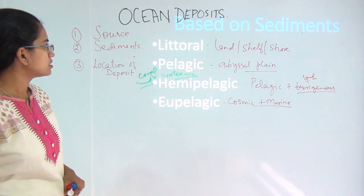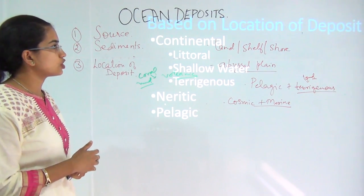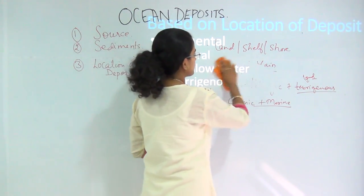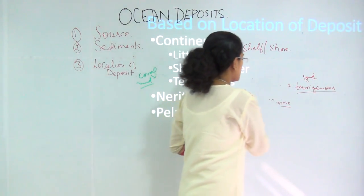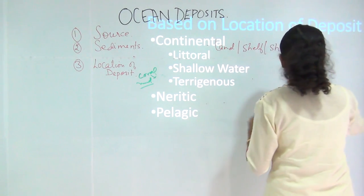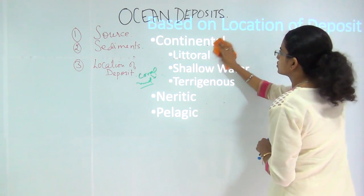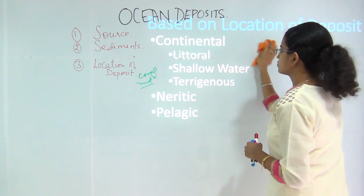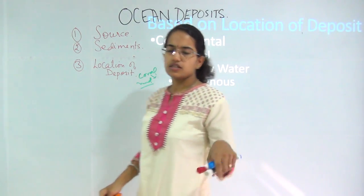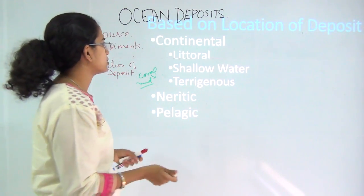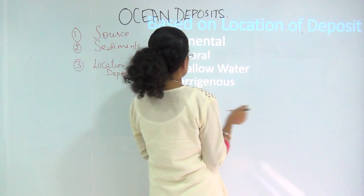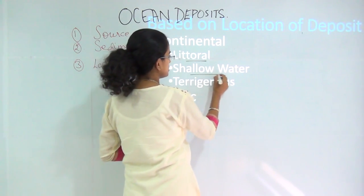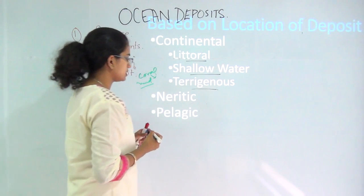The next classification is based on the location of deposit — that is, where the deposit would be settling down. You have the continental region, where deposits settle near the continental floor or continental base. Under continental, you have three classifications: littoral, shallow waters, and terrigenous. Littoral is the land area, the closest region to land.